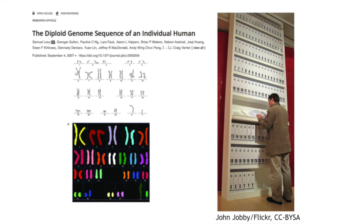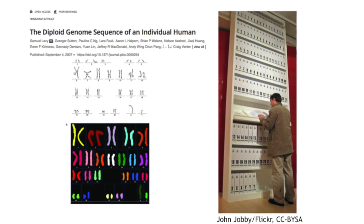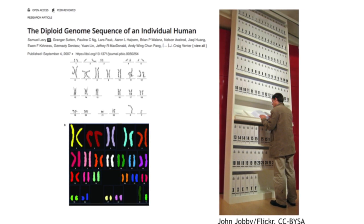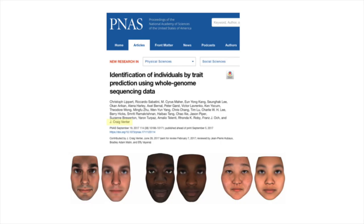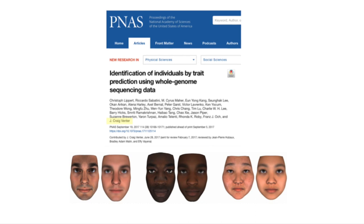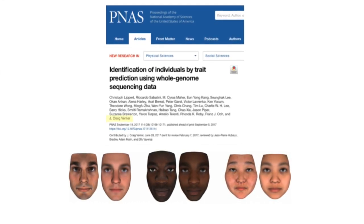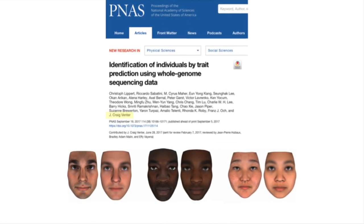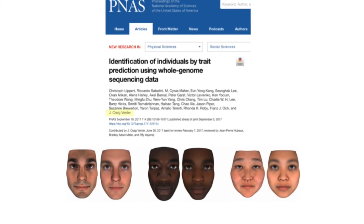In 2007, Craig Venter of the Human Genome Project published the first completely sequenced human genome — his personal genome — and he published it on the internet. Floor to ceiling, it would occupy a full shelf at a library. Fast forward 10 years later, and in 2017, Craig Venter published predictive studies. Taking a genomic sample, Venter can enter the data in a computer model and predict a person's face. Each pair of faces is the actual face photo on the left and the stunningly accurate computer prediction on the right.